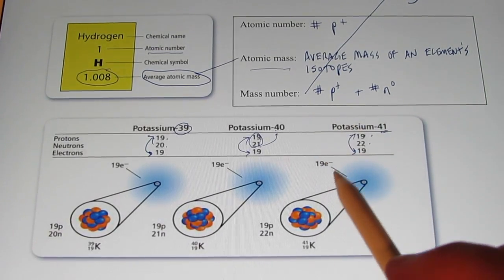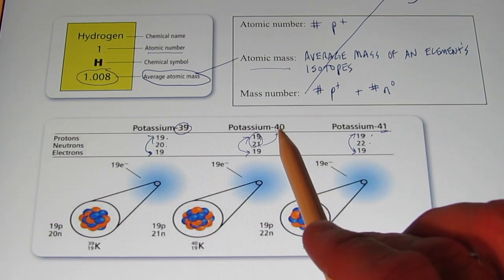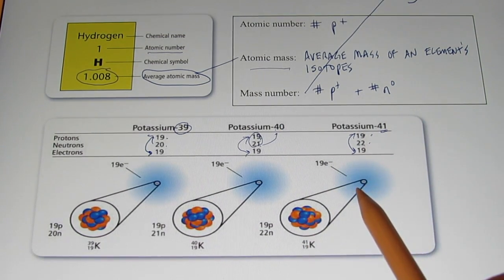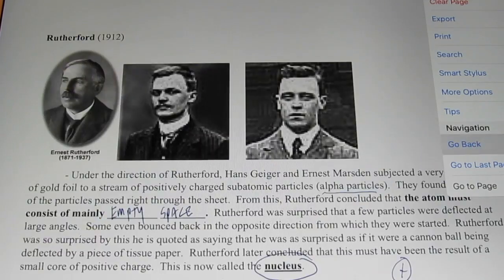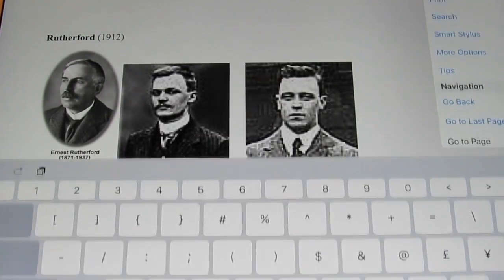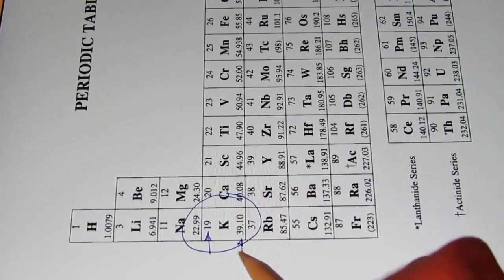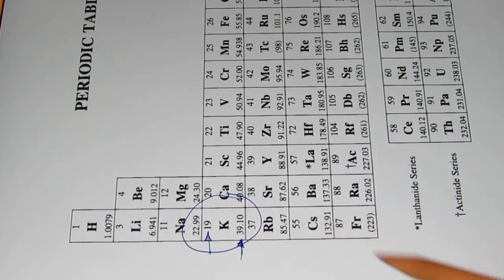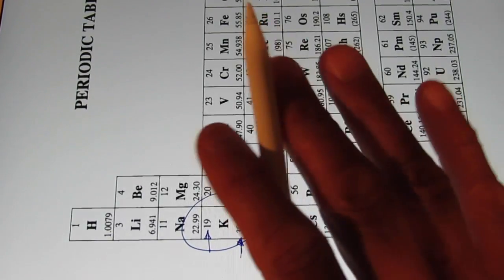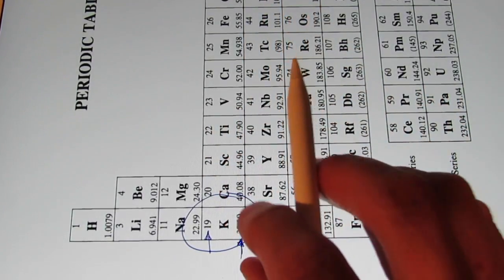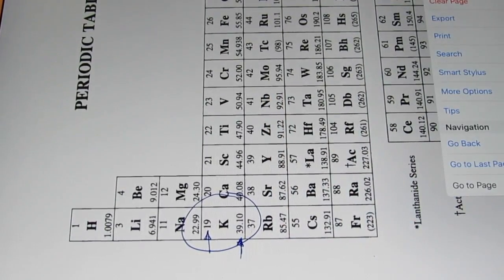What is the most abundant isotope of potassium — 39, 40, or 41? Looking at the periodic table, the average atomic mass of potassium is really, really close to 39. That means the most abundant isotope of potassium probably has a mass close to 39, so potassium-39 is by far and away the most abundant isotope.